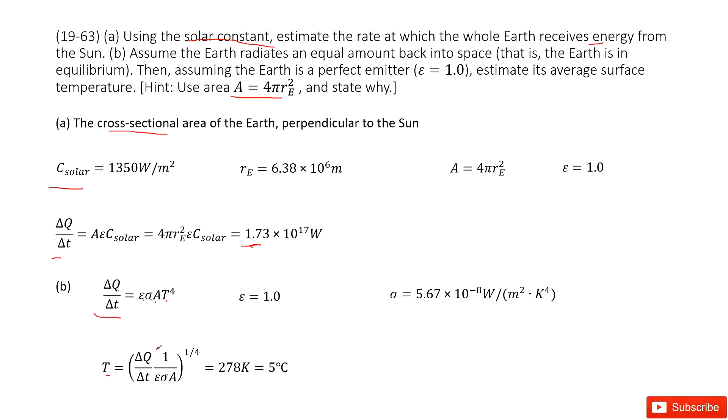And then input all the quantities inside. This one comes from there. Epsilon is 1. Sigma is the constant. A is 4πRe². Then you get the answer there. Thank you.